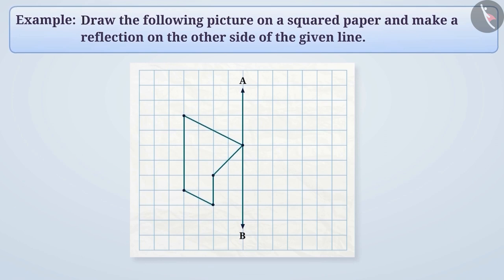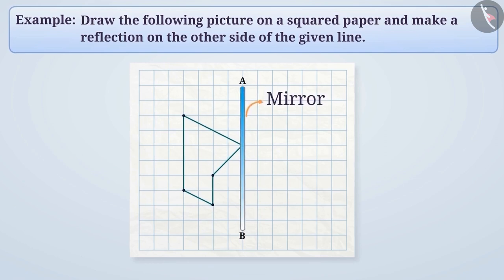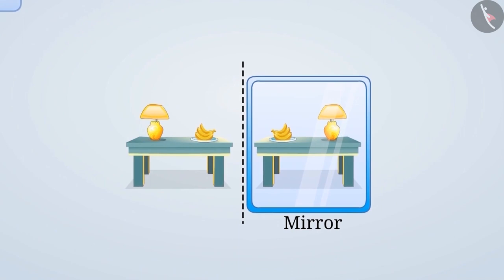Imagine that there is a mirror in place of AB. As you know, in a mirror, the right part of the object appears on the left and the left part on the right, but the lengths and angles are equal.